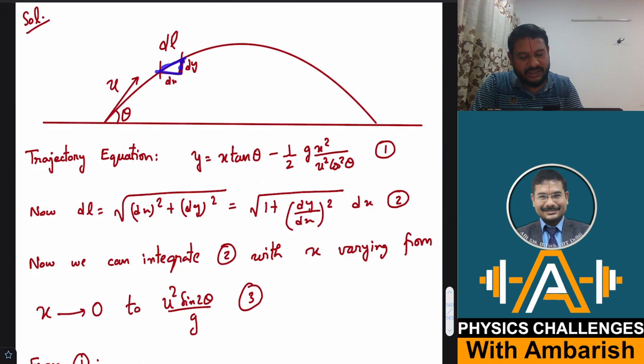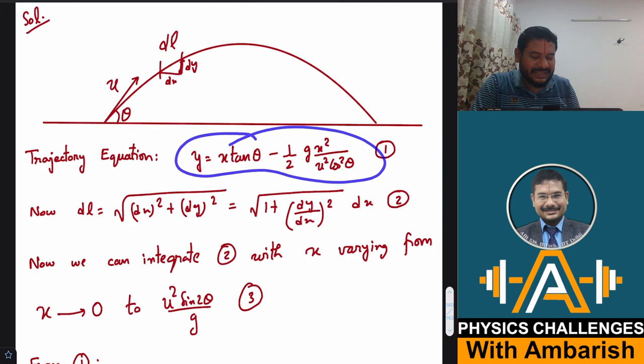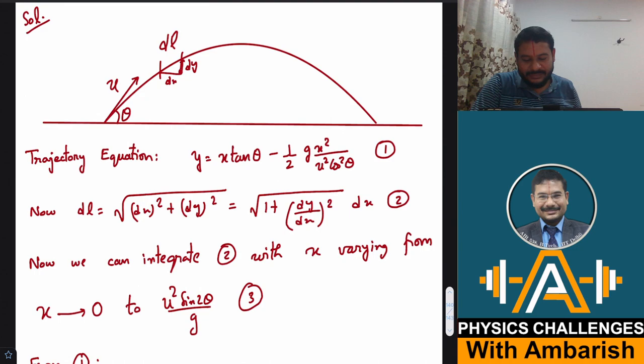And of course trajectory equation is what: y is equal to x tan theta minus half g x square upon u square cos square theta, that's a standard result for projectiles. So dl is root of dx square plus dy square and if I take dx common outside it becomes under root of 1 plus dy by dx squared. So now what is dy by dx?